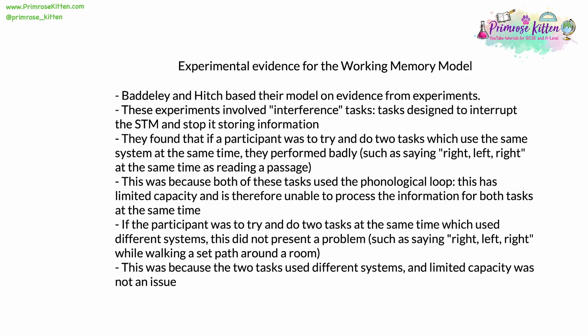There is experimental evidence for the working memory model. Baddeley and Hitch based their model on evidence from experiments usually involving interference tasks — tasks designed to interrupt short-term memory and stop it efficiently storing information. They found that if a participant tried to do two tasks using the same system at the same time, they performed badly. For example, saying 'right, left, right, left' while reading a passage from a book — both tasks use the phonological loop. This loop has limited capacity, so it cannot process the information for both tasks simultaneously.